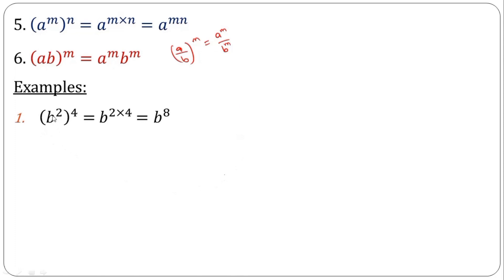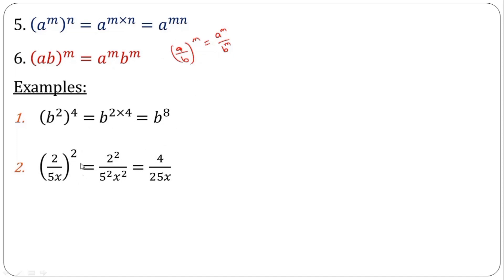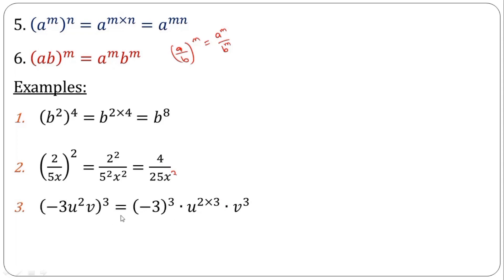Look at the examples. For b raised to the power of 2, all raised to the power of 4: remove the bracket, you get 2 times 4, which is 8. For the division example, removing the bracket distributes the power onto the numerator and denominator. By the negative index rule, this gives 4 all over 25 times x raised to the power of 2. For rule 6, the power of 3 distributes on everything: on minus 3, on u raised to the power of 2, and on v. So minus 2^3 is minus 27, u^(2×3) simplifies accordingly, giving the final result.